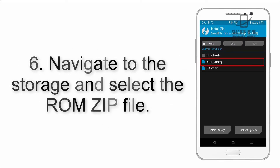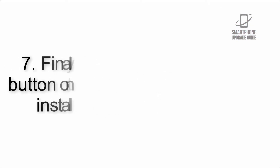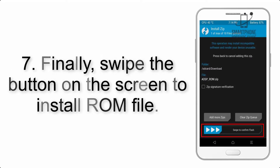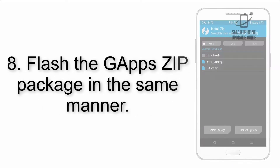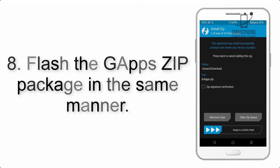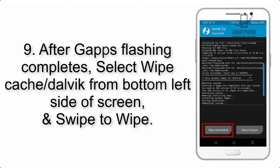Step 5: Go back to the recovery main screen and tap on the Install button. Step 6: Navigate to the storage and select the ROM zip file. Step 7: Finally, swipe the button on the screen to install the ROM file. Step 8: Flash the GApps zip package in the same manner.